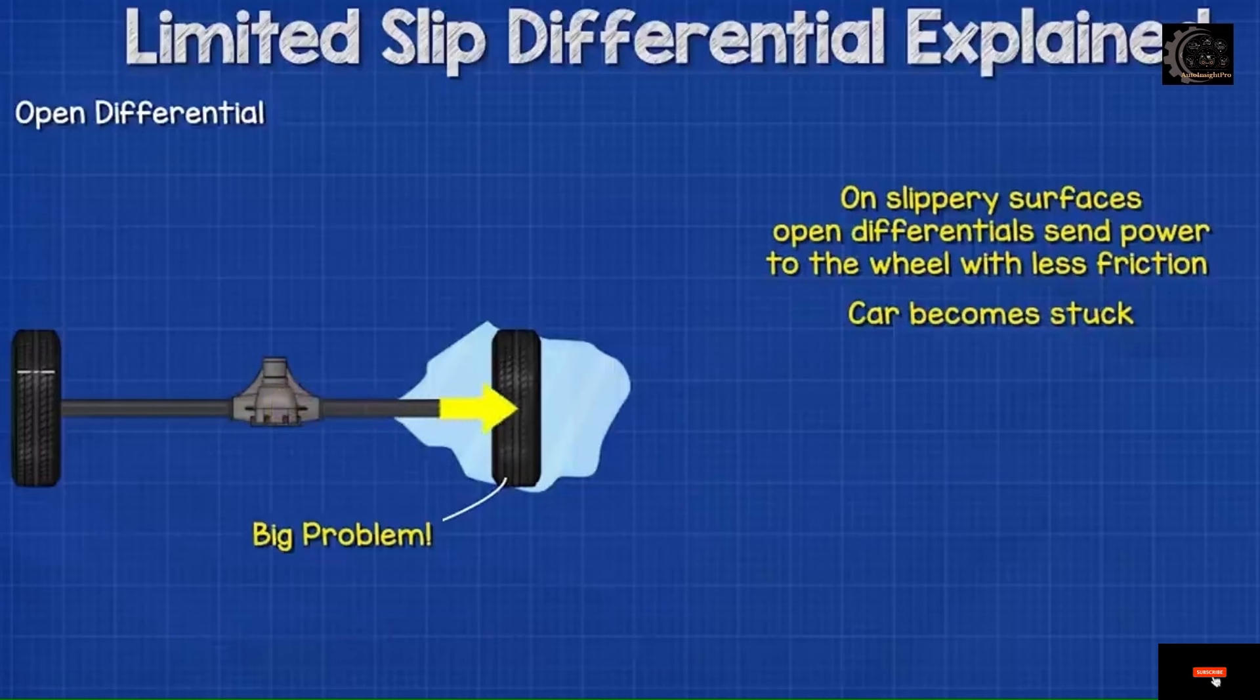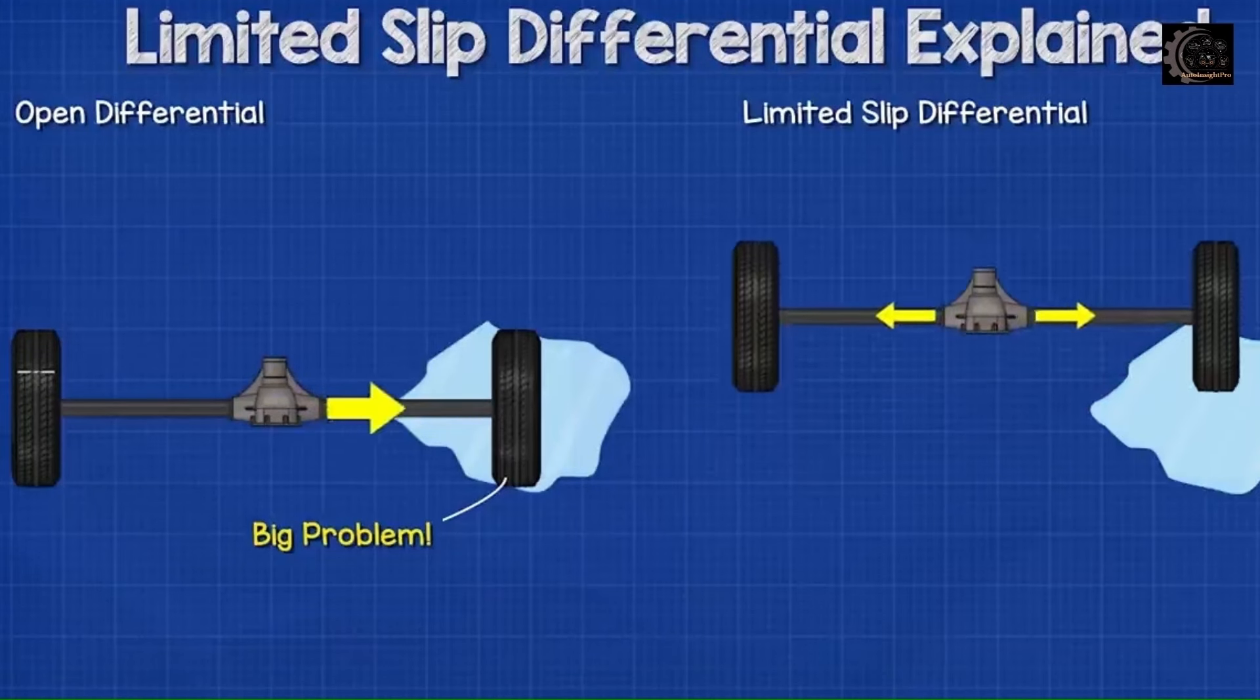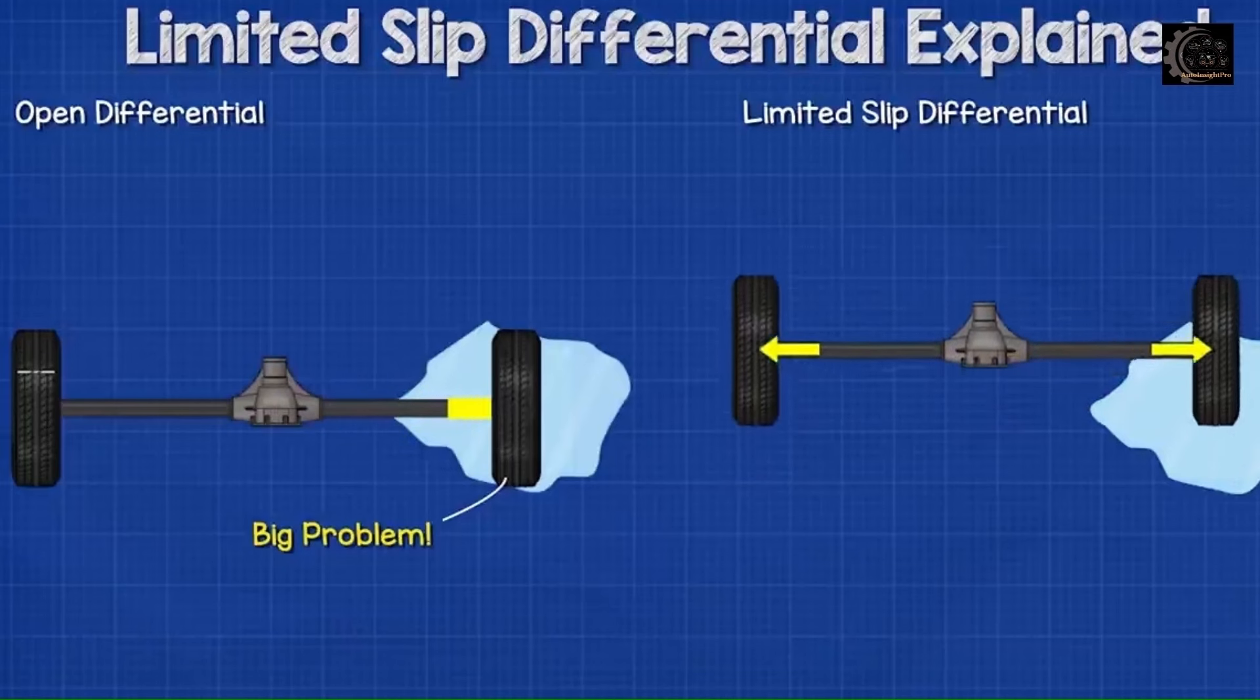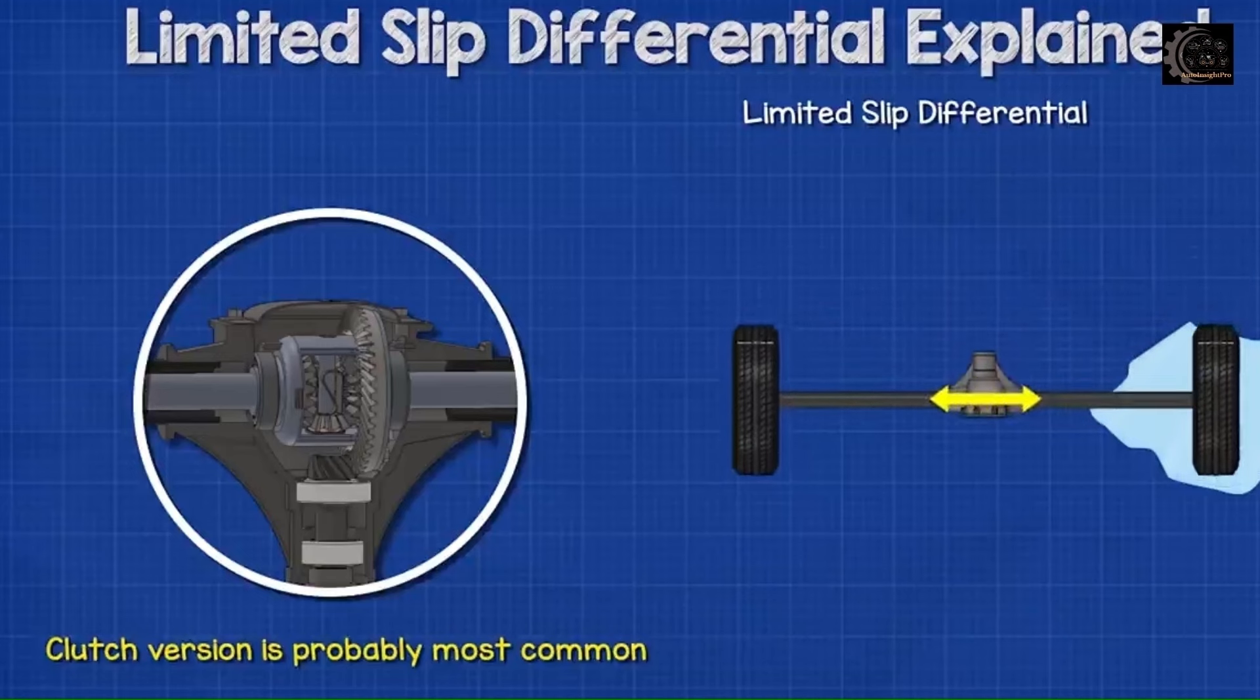The problem with open differentials is that they send power to the wheel with less friction, which causes the wheel to slip. We need a slightly different design that limits the slip of the wheel with less friction. So we use a limited slip differential. The clutch based version is probably the most common. So we will learn how this works.